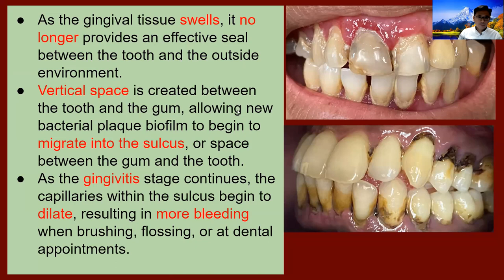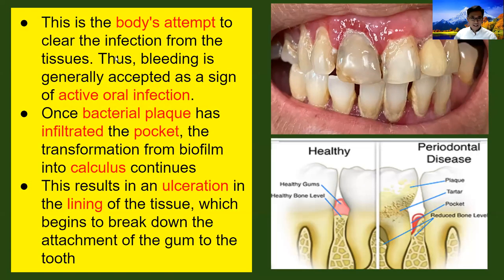As the gingivitis state continues, the capillaries within the pocket begin to dilate, resulting in more bleeding when brushing and flossing. The reason you have more bleeding is that those blood vessel capillaries become dilated — it's basically the body's attempt to clear the infection of an active gum disease, sweeping out the toxins.